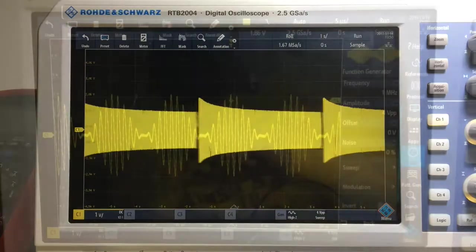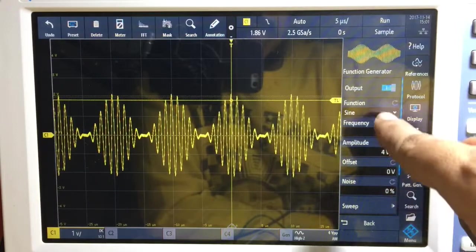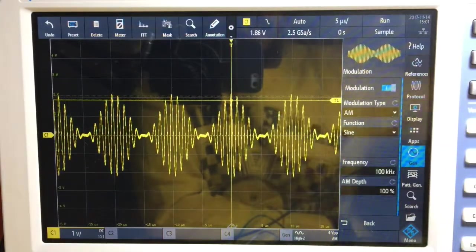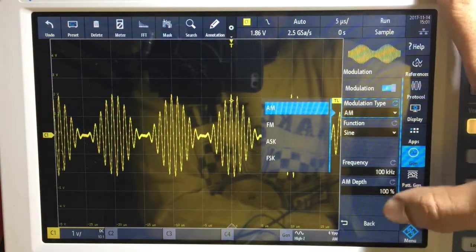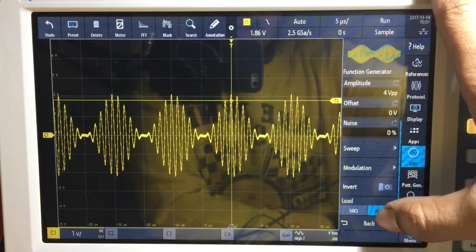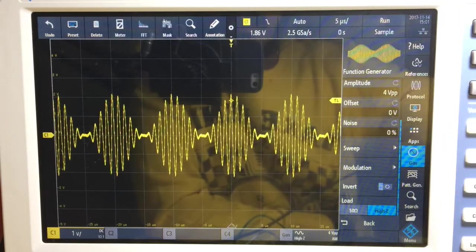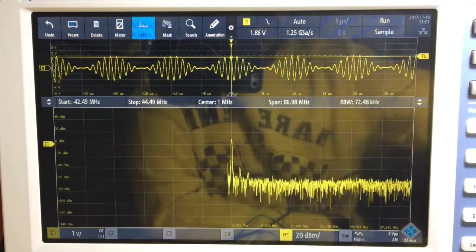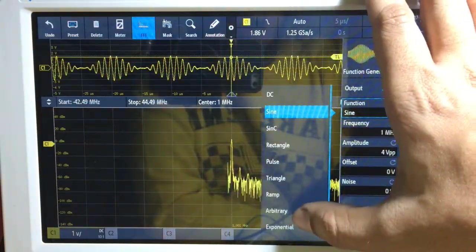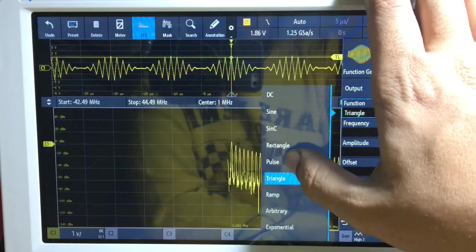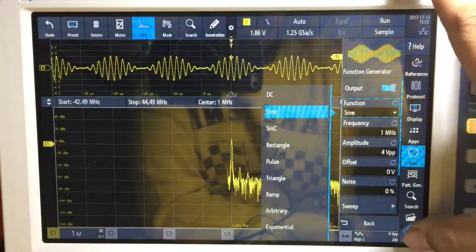Since we're working on the function generator, I wanted to show you the modulation capability. It can modulate AM, FM, ASK, FSK. I've got a one megahertz signal being modulated by 100 kilohertz. You can generate all kinds of signals here. You can even generate custom signals from a file. There's arbitrary, exponential, ramp, triangle, pulse, rectangle. You can modulate those as well.